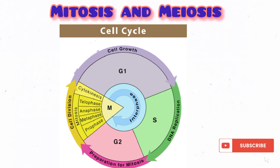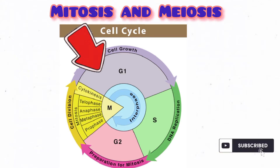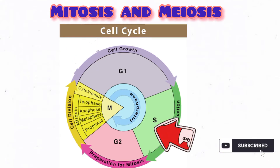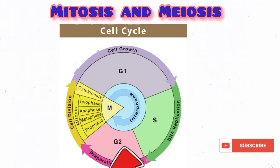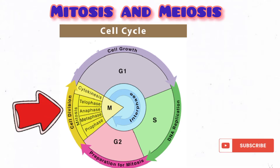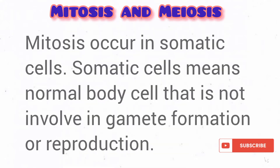In part one of this cell cycle series, we talked about the interphase stage — the G1 phase where growth occurs, the S phase where DNA replication occurs, and the G2 phase where more growth, DNA checking, and other processes happen. Now in this video, we'll be talking about the cell division stage, shown in yellow on your screen. Cell division is actually of two kinds: mitosis and meiosis.